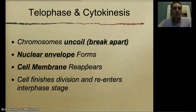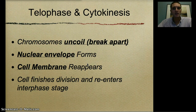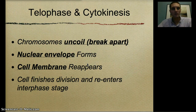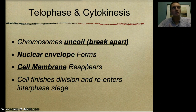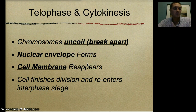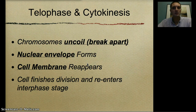The chromosomes uncoil, the nuclear envelope reforms, the cell membrane reappears, and the cell finishes division and re-enters interphase. Once the whole process is completed, we have two identical cells with the exact same DNA, and they begin interphase again. You might wonder — if all these cells are dividing repeatedly, what happens to all the extra cells? Cells have a finite lifespan and there are chemical signals that tell them to stop dividing. If something disrupts that control, cells can continue to divide uncontrollably — and that is something we call cancer.